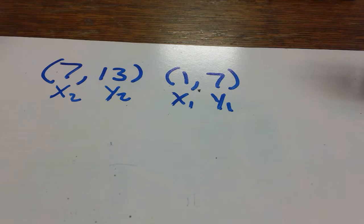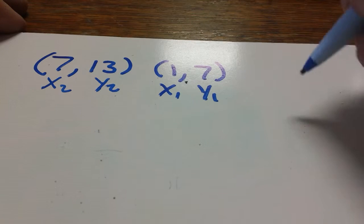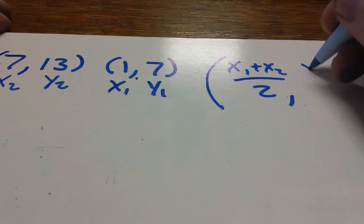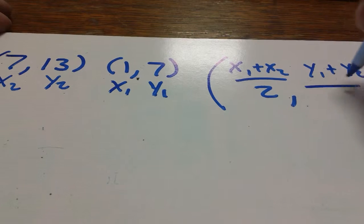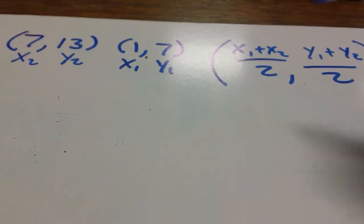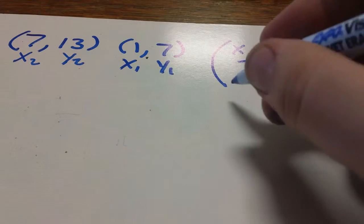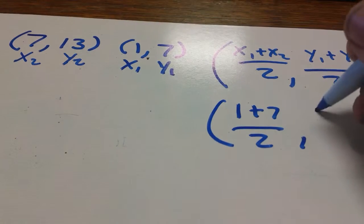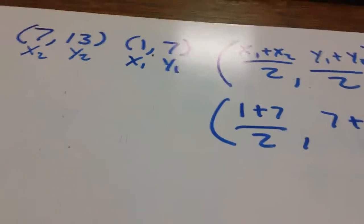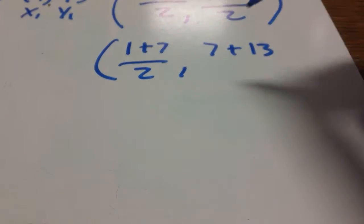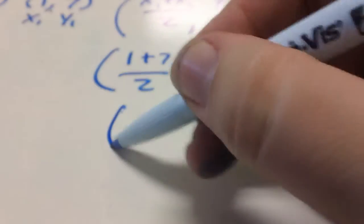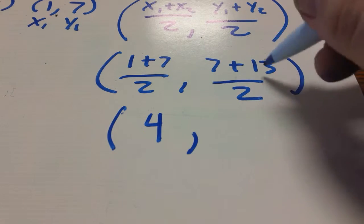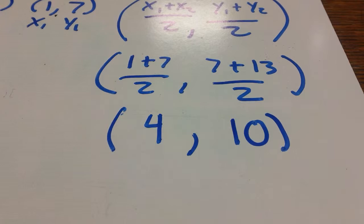So first we want to find the midpoint. The midpoint formula is x1 plus x2 over 2 for the x coordinate, and y1 plus y2 over 2 for the y coordinate. So we can plug our numbers in. x1 being 1, x2 being 7, so 1 plus 7 over 2. And then y1, 7, plus y2, 13. Let me move my camera a bit. This will simplify to 8 over 2 or 4. And then 7 plus 13 gives us 20. 20 divided by 2 will be 10. So that's our midpoint, (4,10).